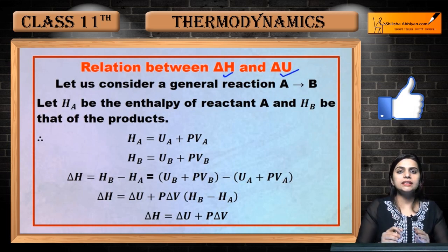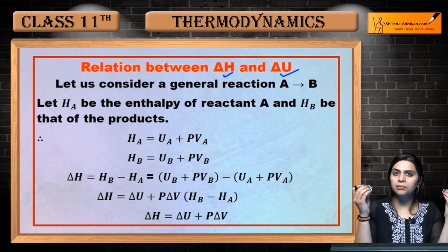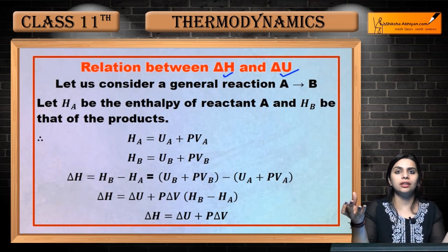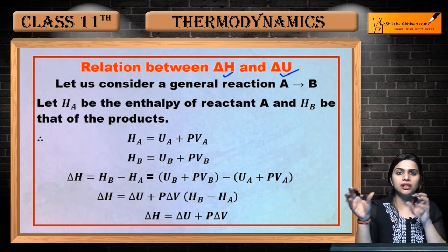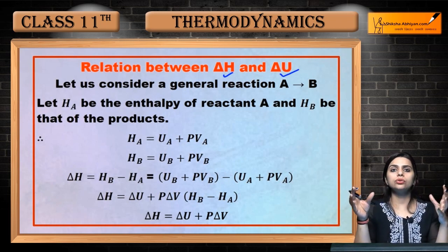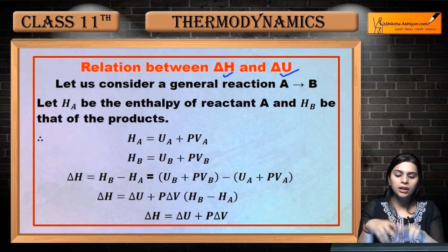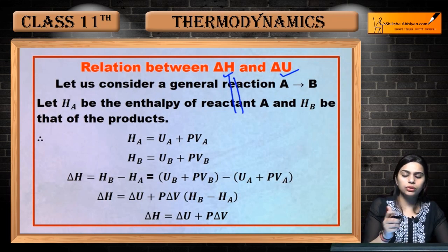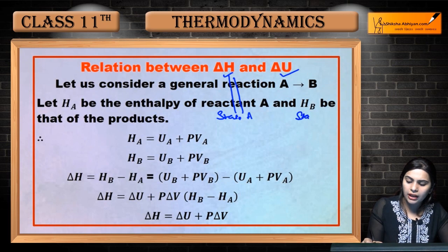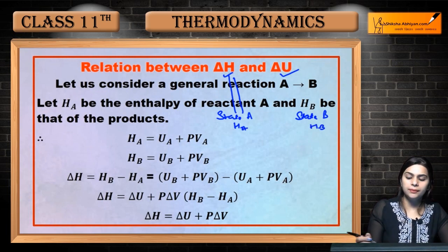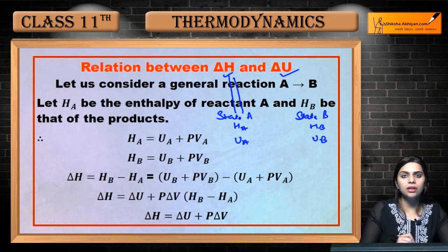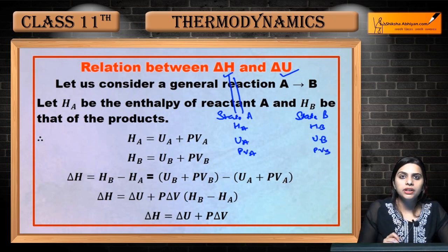ΔH aur ΔU mein relation study karne ke liye hum do states consider karenge. Jahan bhi aap change ki baat karo — delta H, delta U, koi bhi delta X, Y, Z — matlab aapke paas do states hain: initial aur final. Un states ka difference aapko change deta hai. Toh agar hum delta H ki baat karein: ek state A hai, ek state B hai. State A mein HA aur UA hai, state B mein HB aur UB hai. Work ke liye: kyunki hum constant pressure study kar rahe hain, pressure same rahega — PVA for state A.